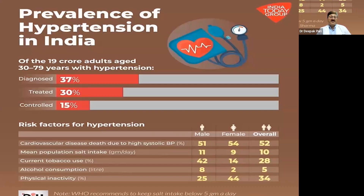In India, among the age group 30 to 79 years, of the 37% diagnosed patients, only 30% get properly treated and only 15% are controlled. Cardiovascular death due to high blood pressure is 51% in males and 54% in females. Salt intake averages 11 grams in males and 9 grams in females. Tobacco use is 42% in males and 14% in females. Alcohol consumption is seen in 8% of hypertensive males and 2% of females, and physical inactivity is higher in females — 44% versus 25% in males.